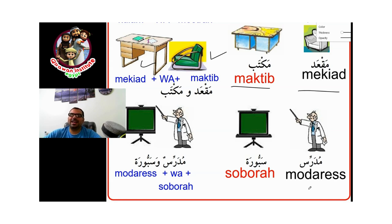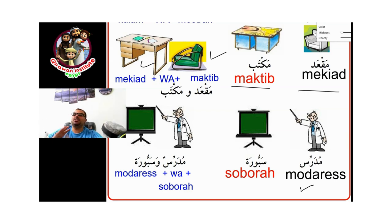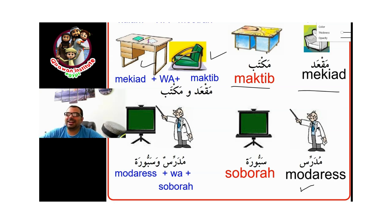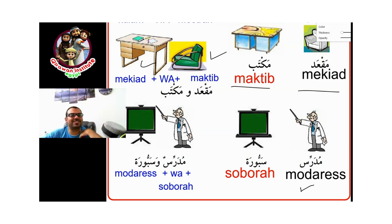The third word is called mudarris. What does it mean? Ma ma'na? — which means 'what does it mean' in Arabic. Mudarris means teacher. It is also called muallim. A lot of Somali communities say muallim. In Arabic language we say mudarris or muallim — both are correct.